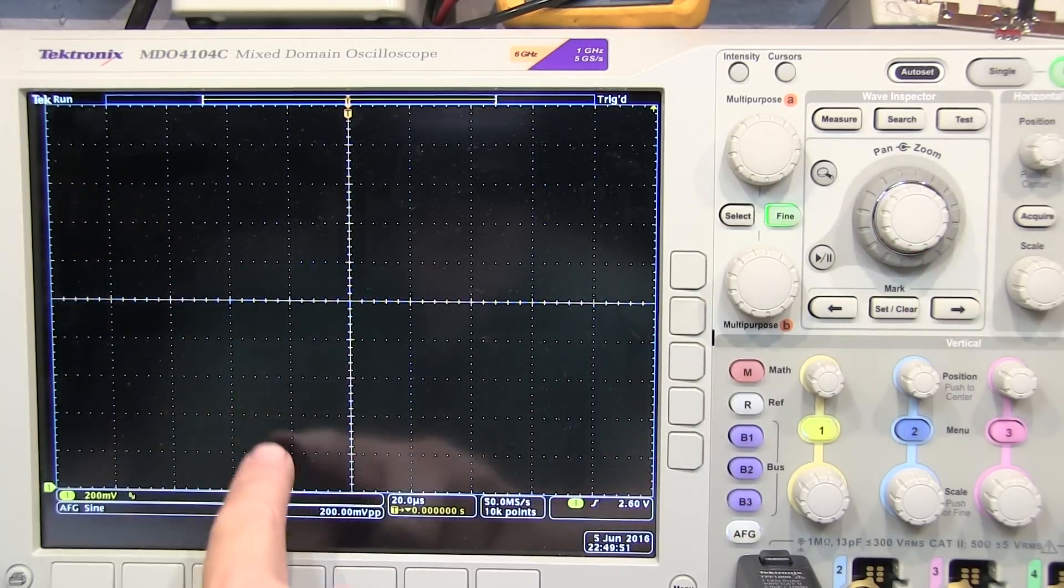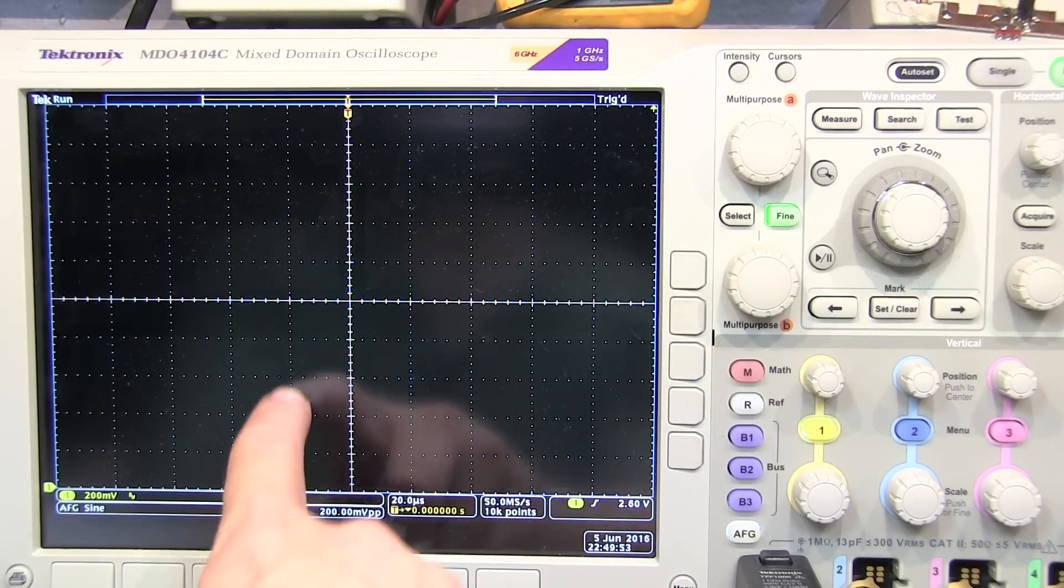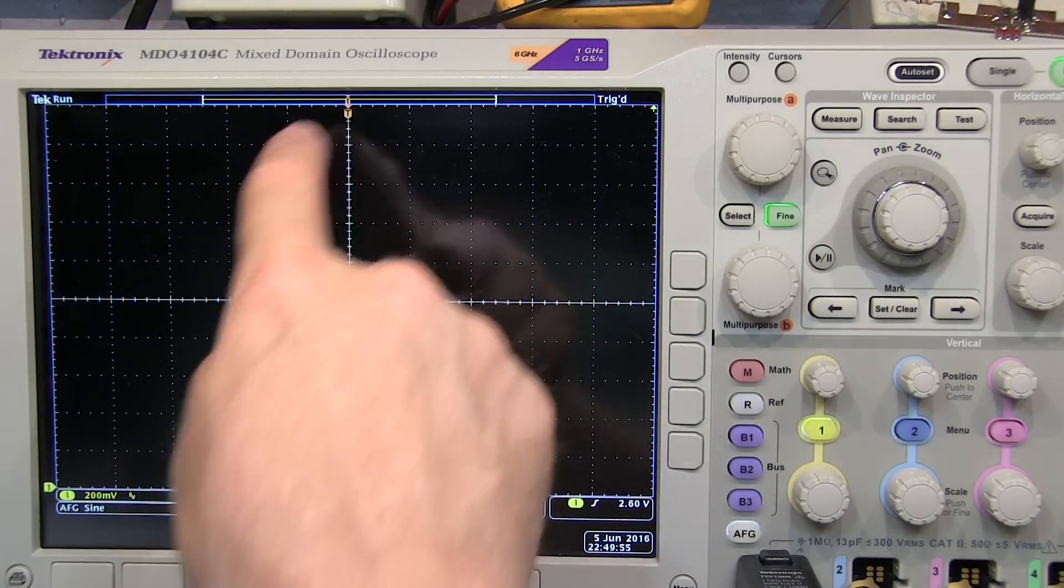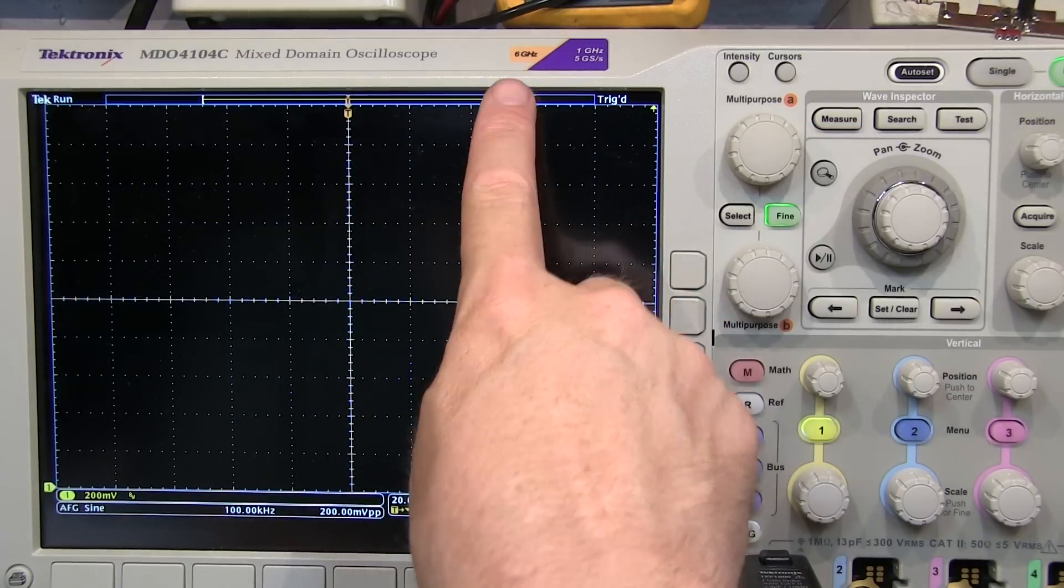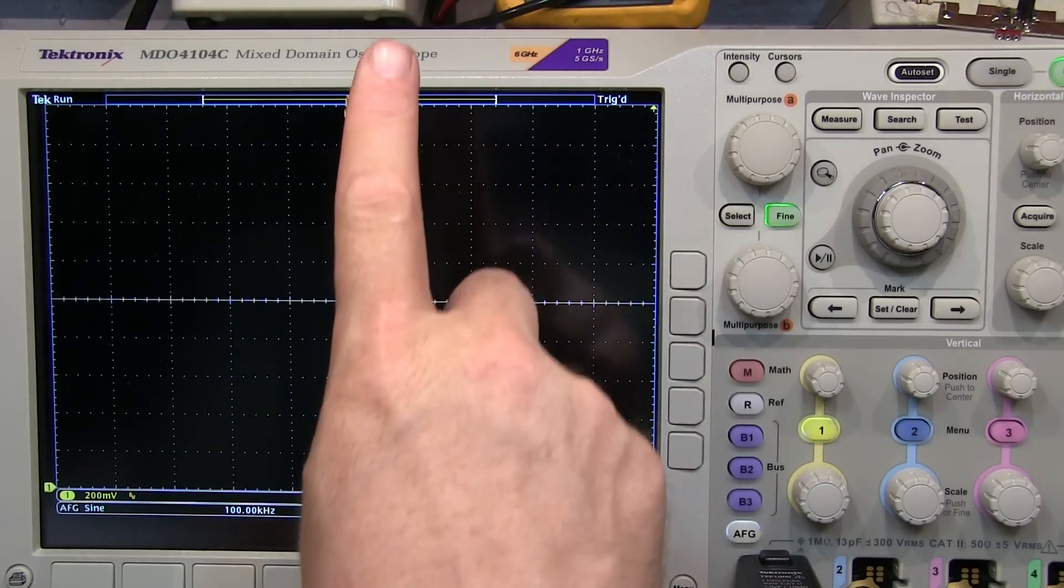I still don't have enough range. Because at 200 millivolts per division, 10 divisions, the top of the screen is 2 volts. I know my signal is sitting at 2.7 volts, which is up there somewhere.